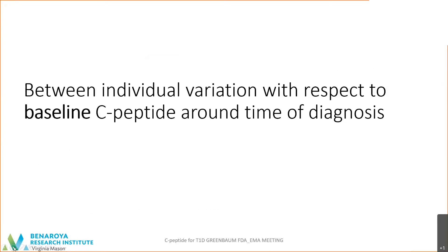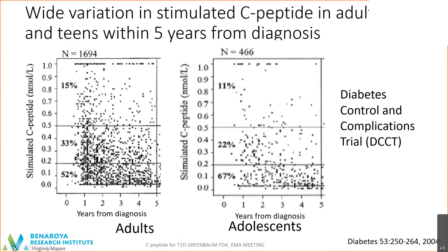First, the between-individual variation with respect to baseline C-peptide around the time of diagnosis. This data is almost 30 years old, and it's from the eligibility visits for individuals being considered for the DCCT, or Diabetes Control and Complications Trial. As is readily evident, stimulated C-peptide from mixed-meal tolerance tests in adults or adolescents up to five years of diagnosis shows wide variation even early after the clinical diagnosis, and surely throughout that five-year period of time.